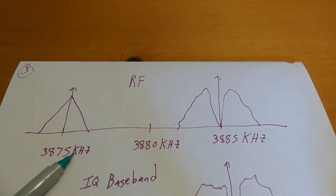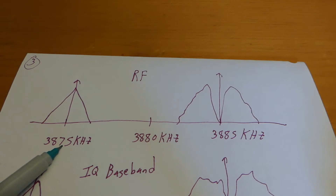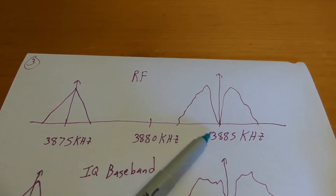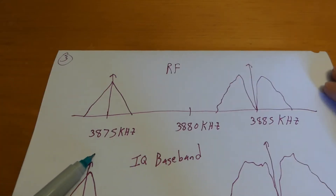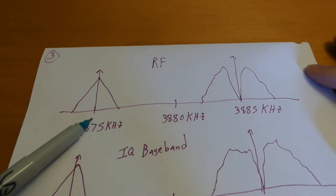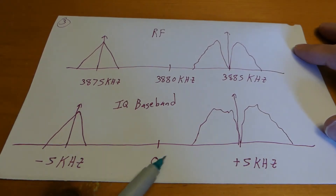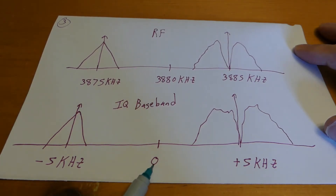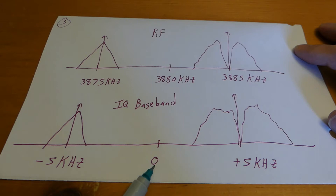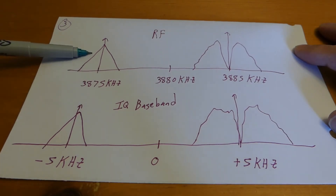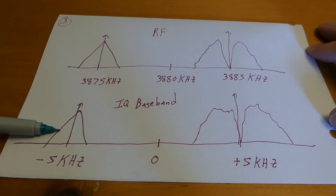We want to put a signal at 3875 kilohertz and another AM signal at 3885. Between them is 3880. Think of this as the RF spectrum. How do we describe that in what's called the baseband spectrum? 3880 would be zero, or DC. The 3875 signal would be at minus five kilohertz, and the 3885 signal would be at plus five kilohertz away from DC. The spectrum up here describes the RF spectrum, and the spectrum below describes the IQ baseband spectrum.